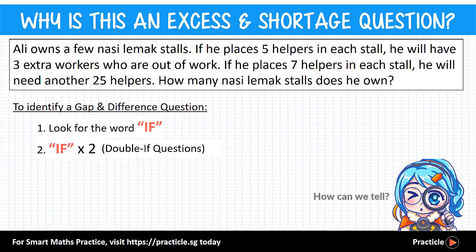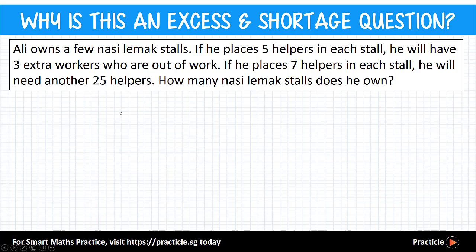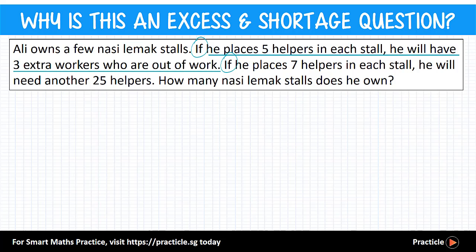It's just like seeing a guy walking around with a yellow Pokémon — instead of calling him Ash, you might decide to call him 'guy with yellow Pokémon.' So let's try to find the two scenarios in this question. We're looking for the word IF. The first scenario after the first IF is when Ali places 5 helpers in each store, and the second scenario comes after the next IF, where he places 7 helpers in each store.